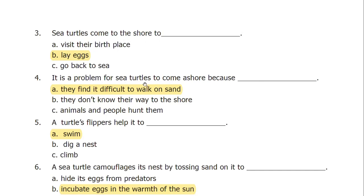It is a problem for sea turtles to come ashore because they find it difficult to walk on sand. They have flippers — flippers are useful for swimming in the sea, but on land, movement is a problem.